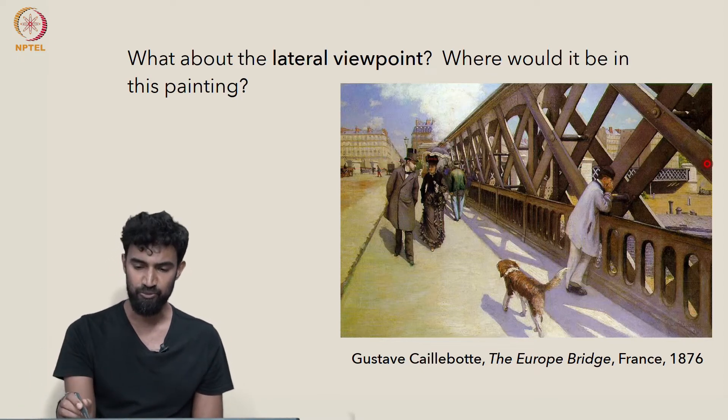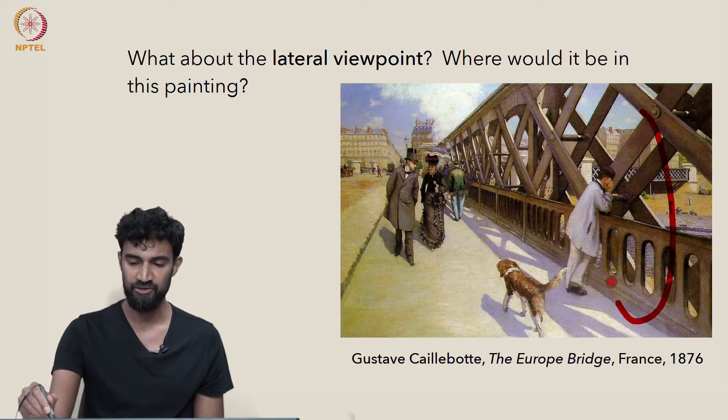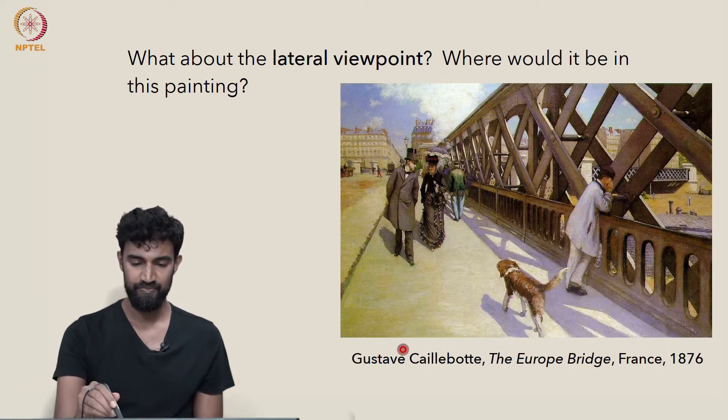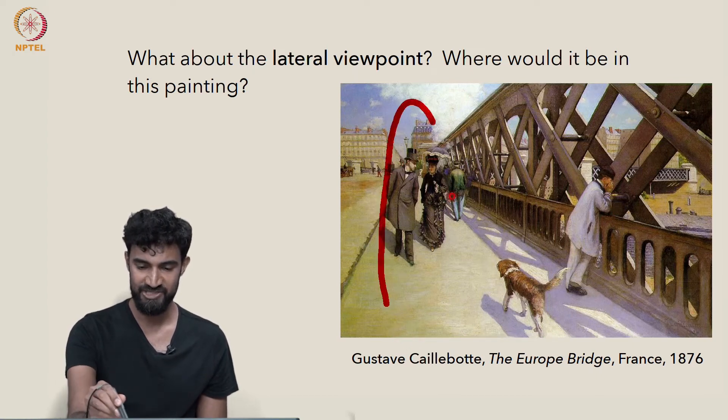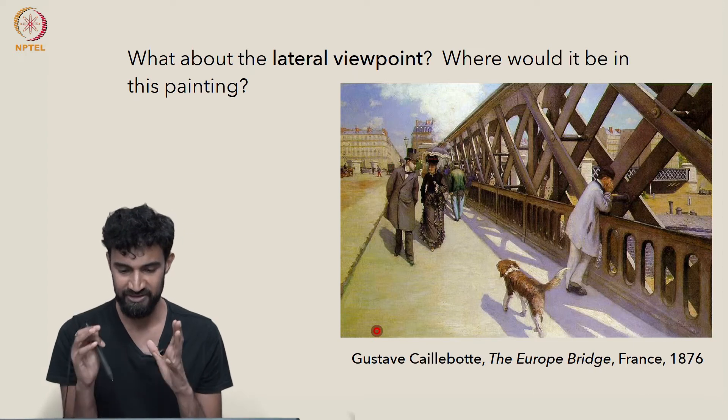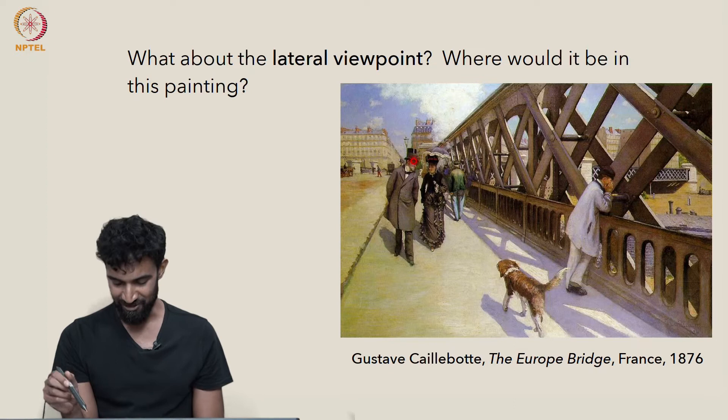And the eye level will be the horizon line. And the lateral viewpoint—well, it definitely feels like the viewer is not over here. And since the vanishing point is here, it sort of feels like the viewer is standing here. If you're viewing the image from this location, that somehow feels more right.